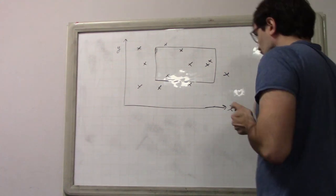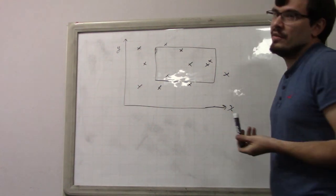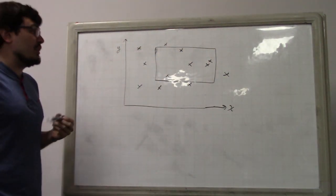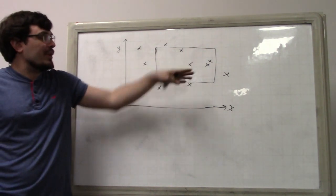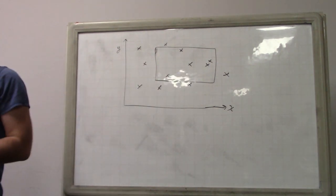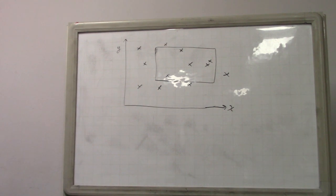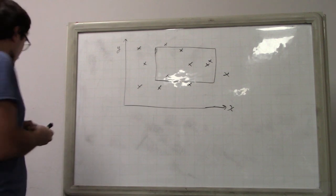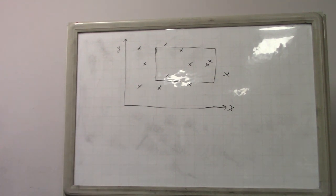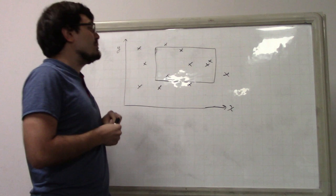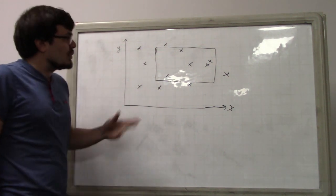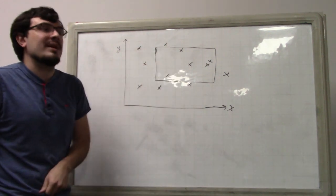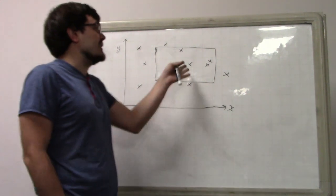We'll start with the static version of this problem. By static I mean the points aren't moving and we're not adding or removing any points. We're allowed to pre-process the points, and then we have to answer rectangle queries efficiently — more efficiently than just linear time.